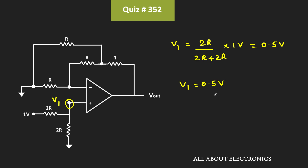Now because of the negative feedback, we can apply the concept of the virtual short. That means V+ is equal to V−, so the voltage at both the inverting and the non-inverting terminal will be equal to V1.